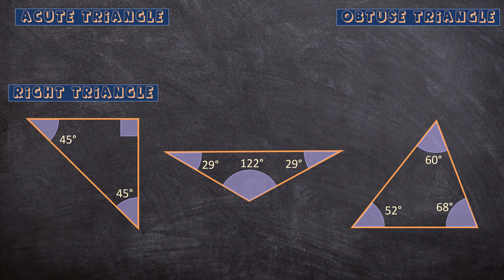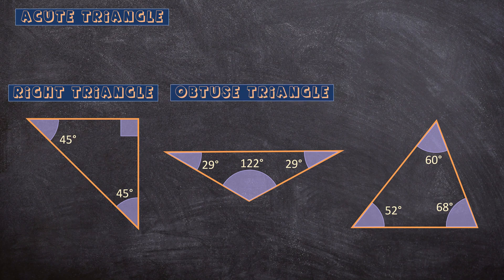How about the triangle in the middle? This triangle has an angle bigger than 90 degrees, so this is an obtuse triangle.